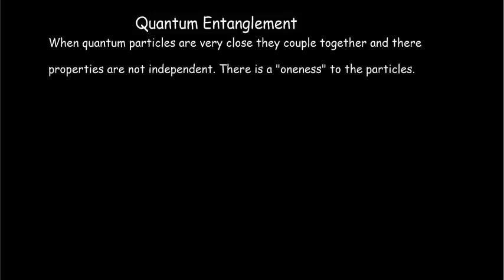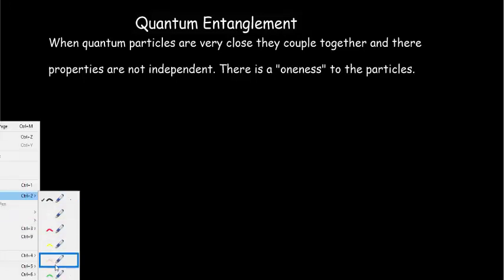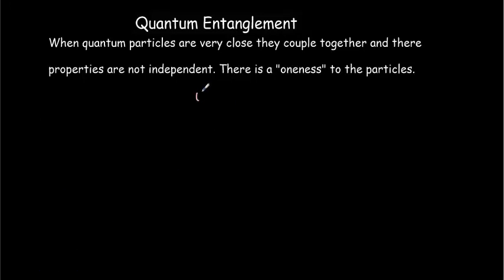So examples of this would be the two electrons in the ground state of a helium atom. They would couple together. Or we have virtual particles. A pair of photons can be created out of a singularity in space. They would be coupled. Or let's say we've got a positron and an electron. They're antiparticles of each other. And if they collide, they will annihilate each other and produce a couple of photons. So let's draw our pair of coupled photons produced because of that annihilation.